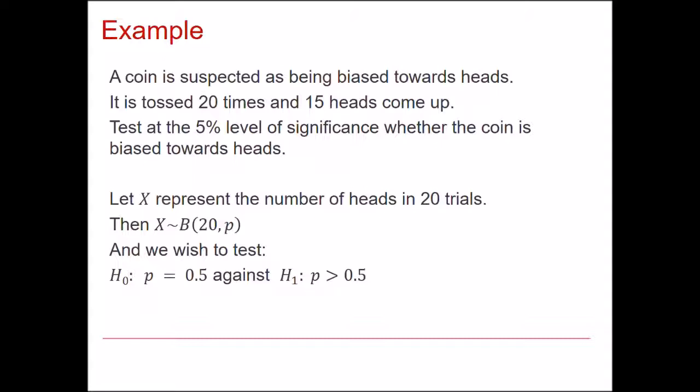We want to test it against H0, the probability that it is fair. So that's the probability of getting 0.5. And the alternative hypothesis is that the coin is biased towards heads. In other words, the probability is bigger than 0.5.